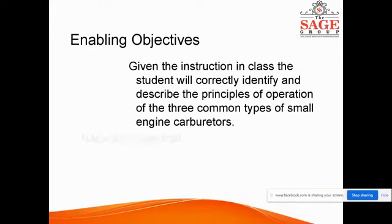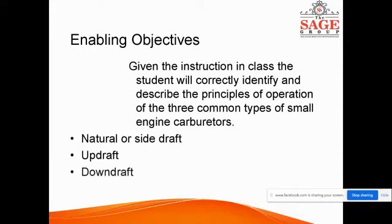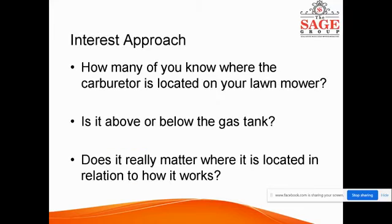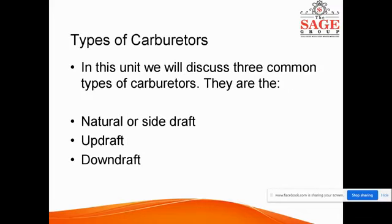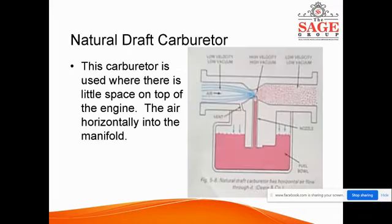The topics to be covered include: principle of operation, and the types — natural or side draft, updraft, and downdraft. We will be able to understand these. Do you know where the carburetor is located on your lawnmower? Is it above or below the gas tank? Does it really matter where it is located?